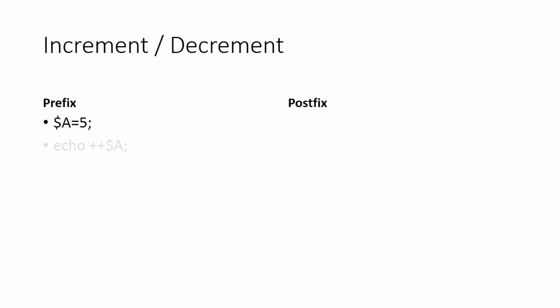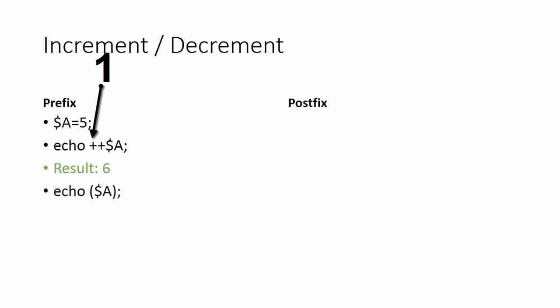Let's look at prefix increment. For example, if variable a equals 5 and you echo ++a, the output will be 6, because the increment is applied before the value is used. If you echo it one more time, the result will be 7. This is prefix increment.